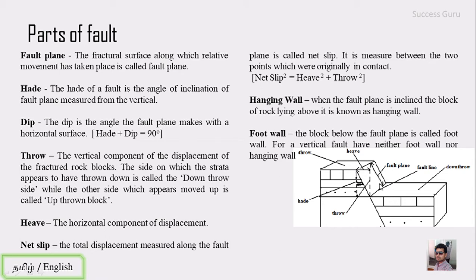The second heading is the hade. The hade is the angle of inclination of the fault plane measured from the vertical. So this is the fault plane — if you measure this inclination from the vertical line, that angle is called the hade. The dip is the measurement of inclination of the fault plane from the horizontal. Remember, there is a relation: hade plus dip equals 90 degrees, as hade and dip form a right-angle triangle.